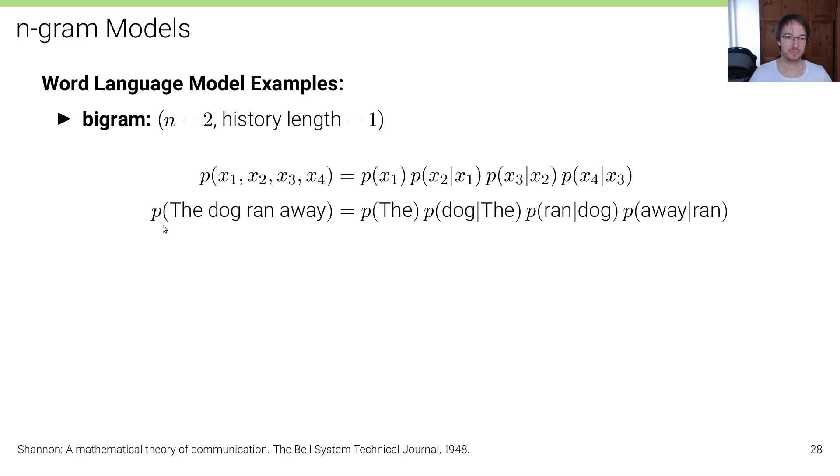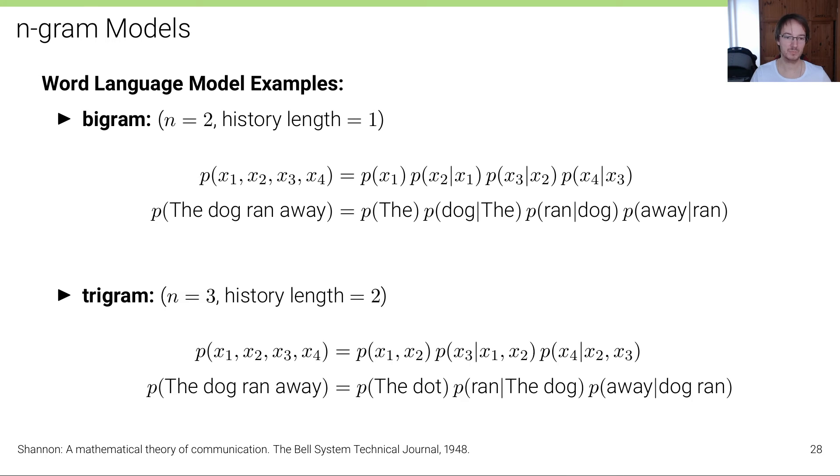With a concrete example, the probability of 'the dog ran away' is then the probability of 'the' times the probability of 'dog' given 'the', times the probability of 'ran' given 'dog' and so on.